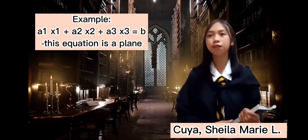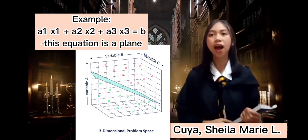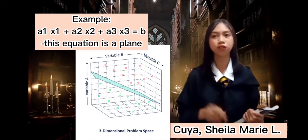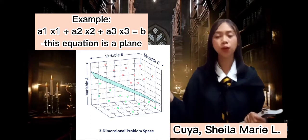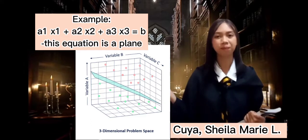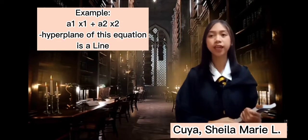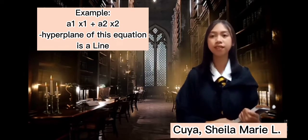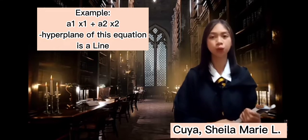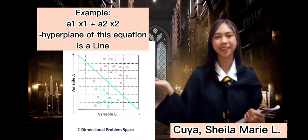If you are working in 3-dimensional space, a hyperplane will be 2 dimensions, and this linear equation will be known as a plane. And if you are working in 2-dimensional space, like a₁x₁ + a₂x₂, then your hyperplane will be a line.